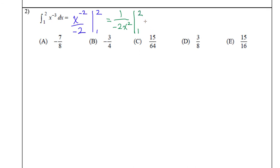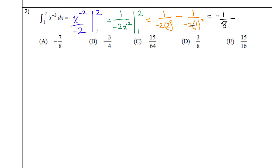Now I know x squared is really on the bottom, so now I can plug in. When I plug in 2: 1 over negative 2 times 2 squared. Then I subtract when I plug in 1: 1 over negative 2 times 1 squared. So 2 squared is 4, times negative 2 is negative 8, giving negative 1/8. Then 1 squared is 1, times negative 2 is negative 2, giving negative 1/2. I have a double negative, so it's really adding. Converting 1/2 to 4/8: negative 1/8 plus 4/8 gives 3/8.